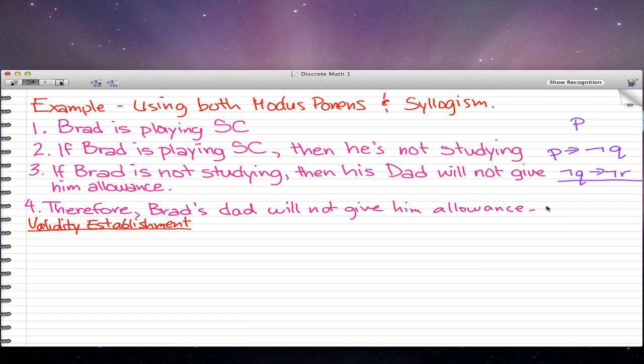Therefore, Brad's dad will not give him allowance. So that's modus ponens in the process. What happened is we just got rid of these two Qs. So what is left, it was P and a P implies not R. And using modus ponens, we got not R.